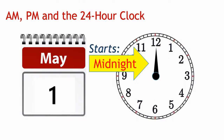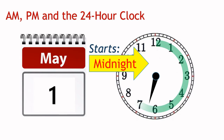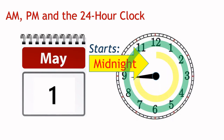A day starts at 12 in the night and has 24 hours. That is, 12 hours plus 12 hours, before the next day begins.